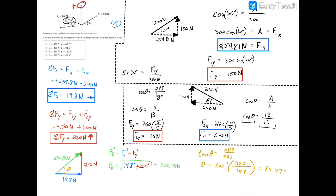That angle is north of the x-axis. So we have a resultant force of 250.78 newtons at an angle of 85.47 degrees. Therefore, we can choose the correct answer as D: 251 newtons and 85.5 degrees.